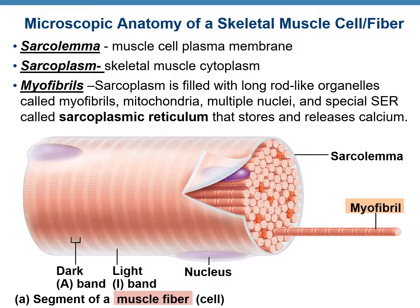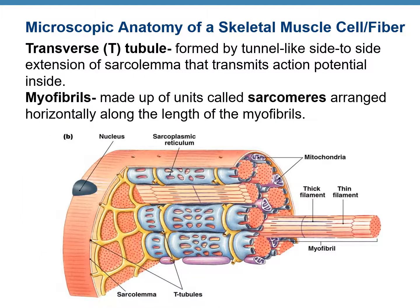This slide describes the microscopic anatomy of a skeletal muscle cell. A skeletal muscle cell or fiber is enclosed by a cell membrane known as the sarcolemma. The cytoplasm inside is called sarcoplasm, which is filled with organelles such as multiple nuclei, mitochondria, and long rod-like myofibrils. There is also a special type of smooth endoplasmic reticulum called the sarcoplasmic reticulum, which stores and releases calcium ions. Special transverse tubules or T-tubules, formed by extensions of the sarcolemma, carry action potentials deep inside the cell.